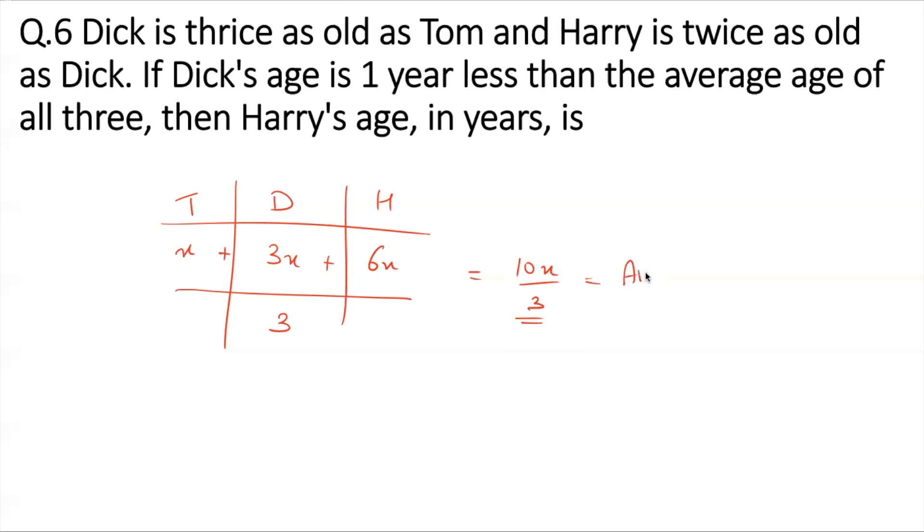That's the average age of all these three people. The question says Dick's age, so Dick's age is 3X, and this age is average age minus one. So Dick's age is equal to one less than the average age of all three.